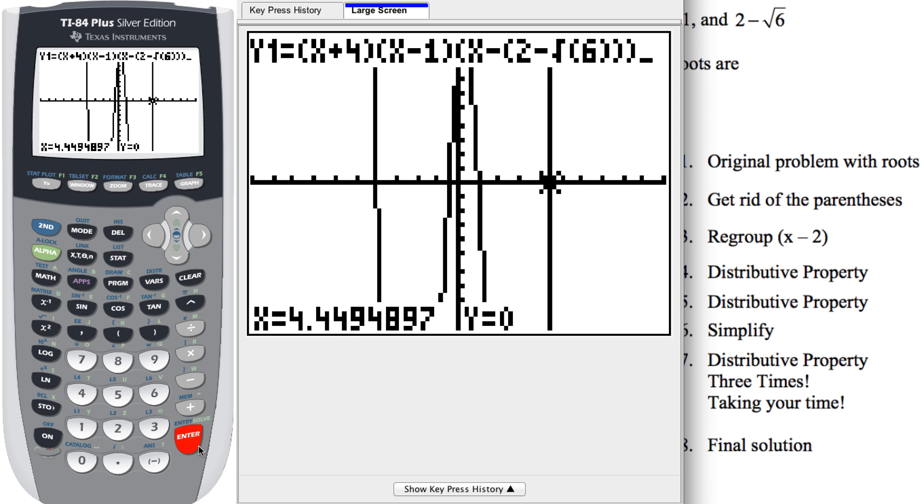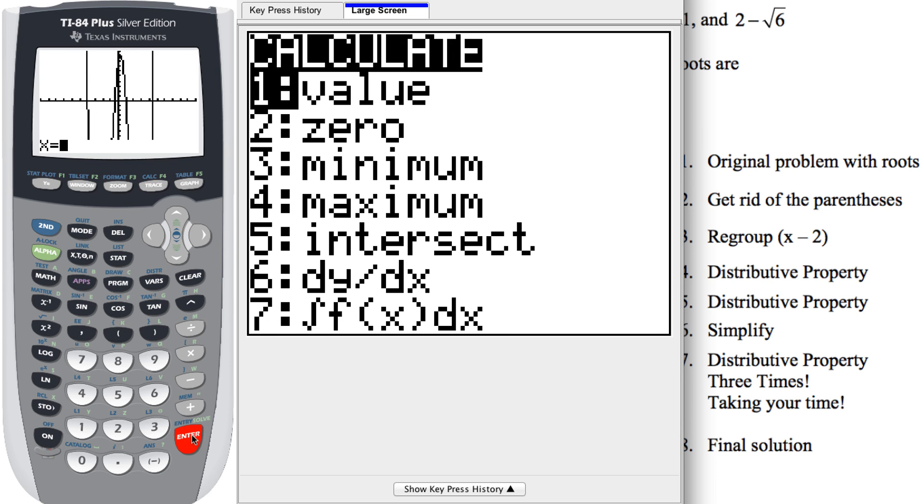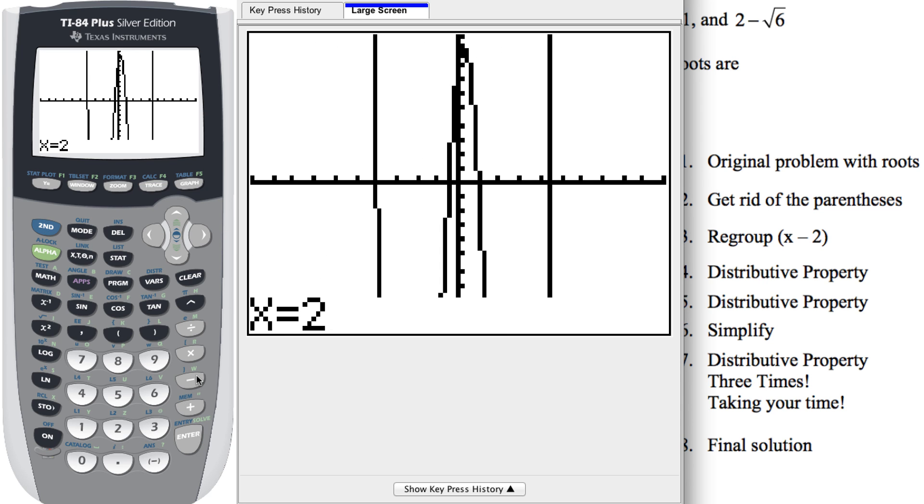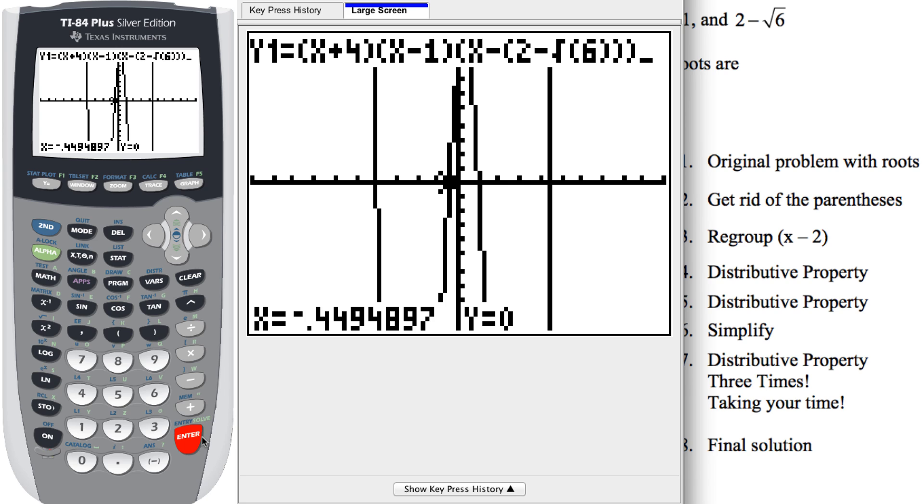Now I'm going to do the same thing again with 2 minus the square root of 6. So hit second, trace again, value and then 2 minus the square root of 6. So I want to know what the y value is when x is 2 minus the square root of 6 and that ends up also being 0. We can see that because of where the cursor is blinking. It looks like it crosses the x axis but it's verified down here where it says y equals 0.